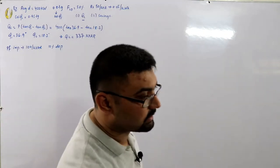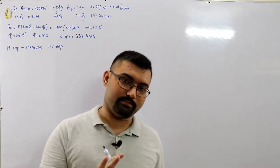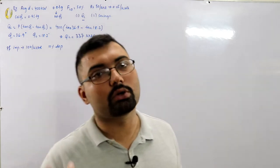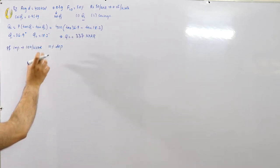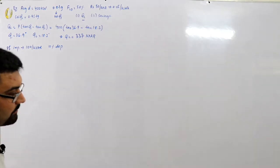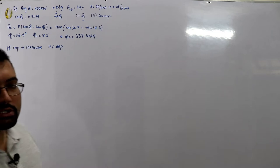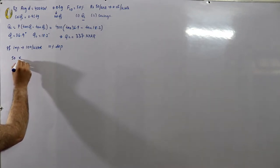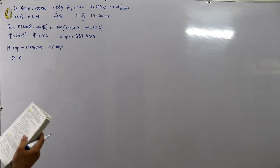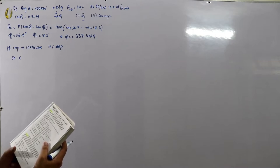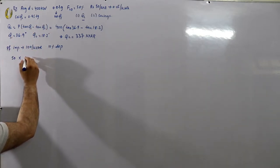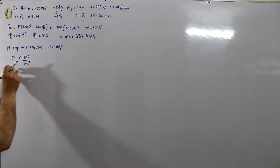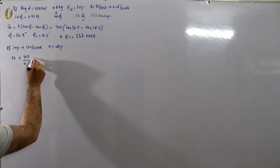The energy charges per kilowatt hour remain the same in both cases, so we don't calculate those here. Only the maximum kVA charges are changing — that is, only the fixed cost is changing. The difference is caused only by those fixed charges. The kVAs in the first case are 400 divided by 0.8, so we calculate the charges for the first case.